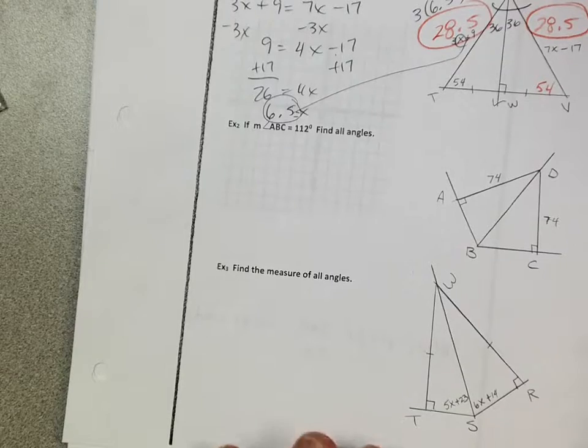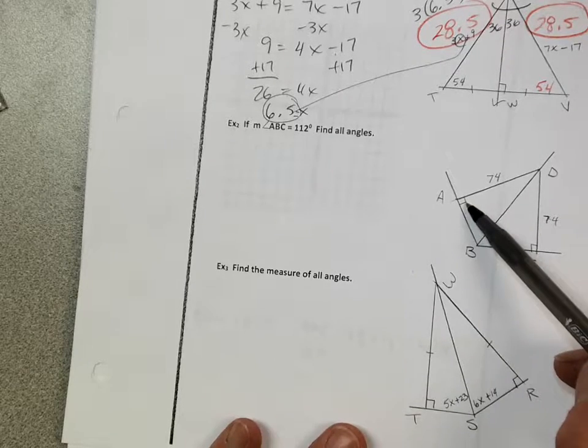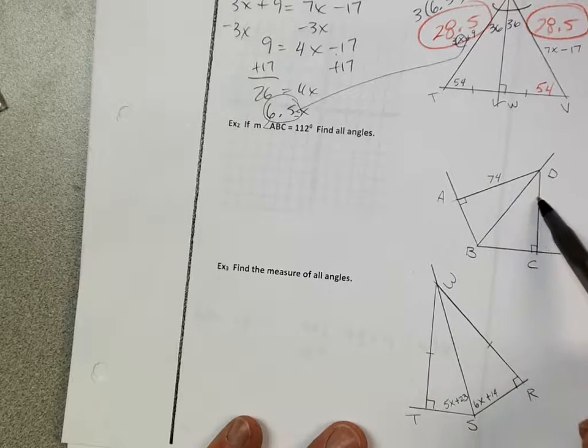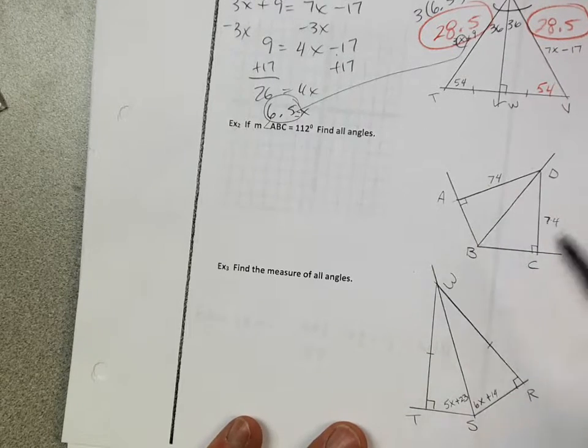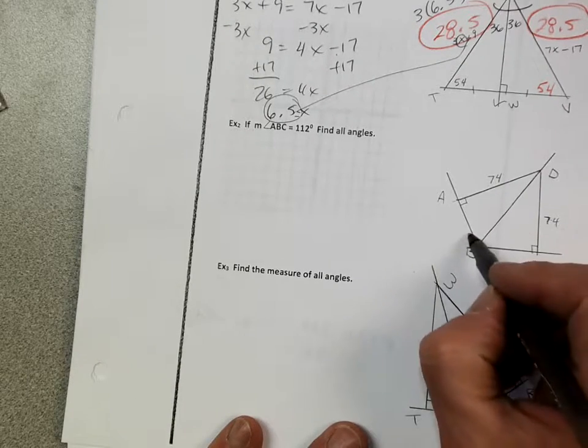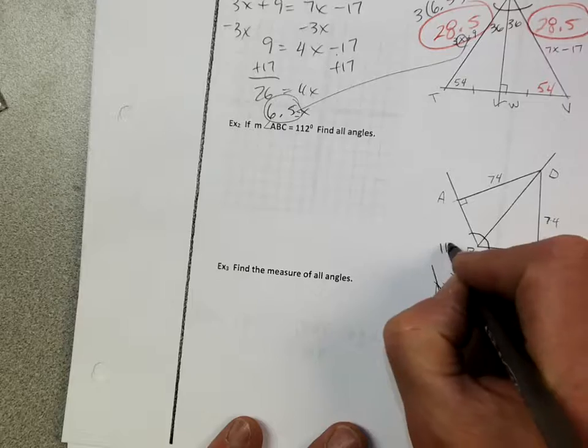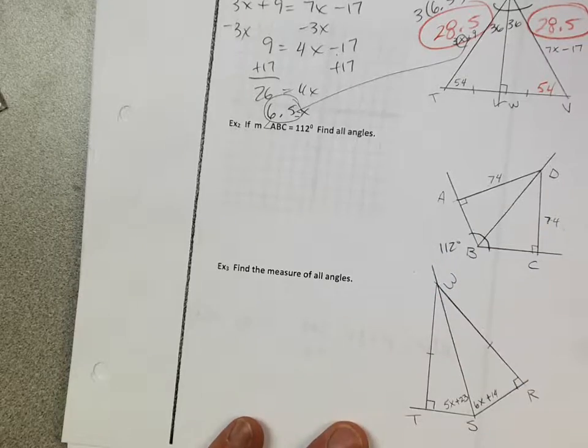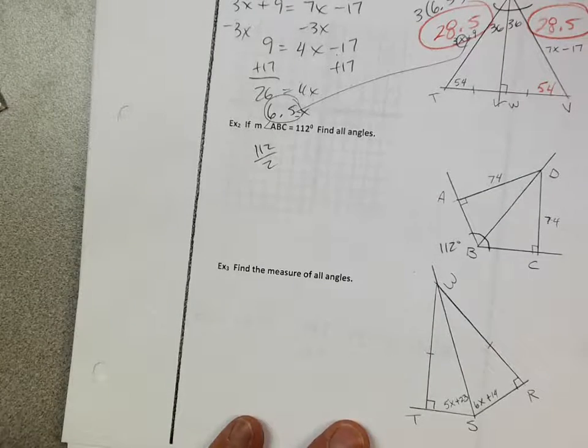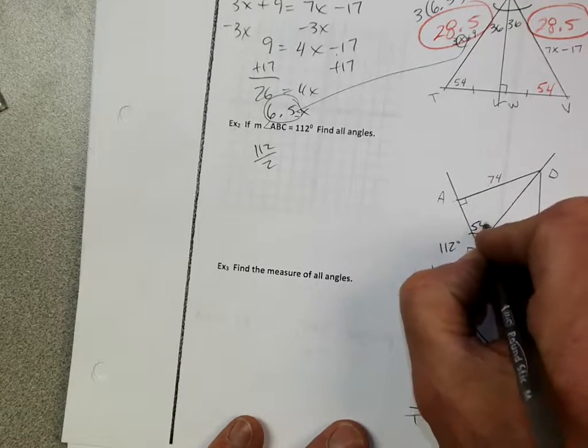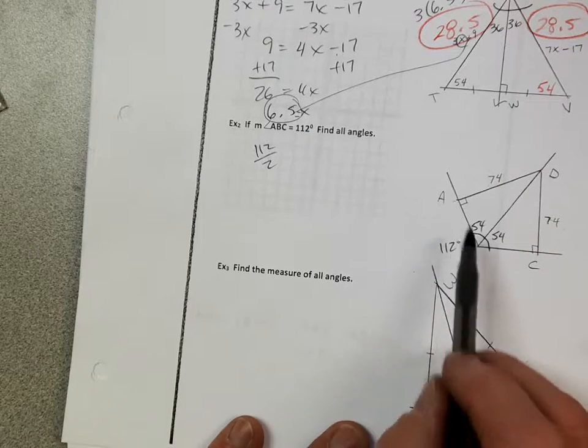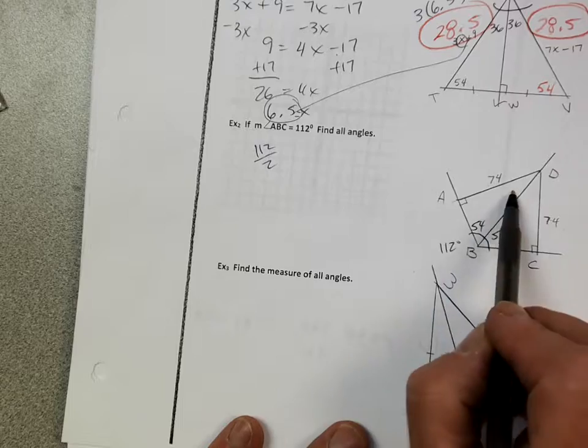All right. Example 2. So it's just the converse. If this is perpendicular, and this is 74, this is 74, it's going to make that an angle bisector, right? It's the converse. So ABC. This whole thing's 112. All right, I'm going to cut that in half, right? It's 112 divided by 2. 112 divided by 2 is 56. So this angle's 56, and this angle's 56, right?